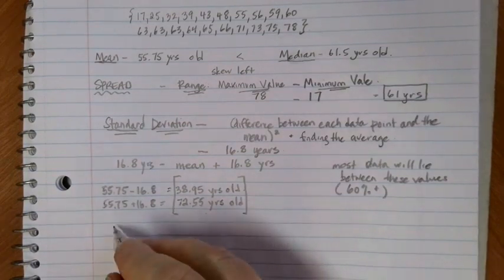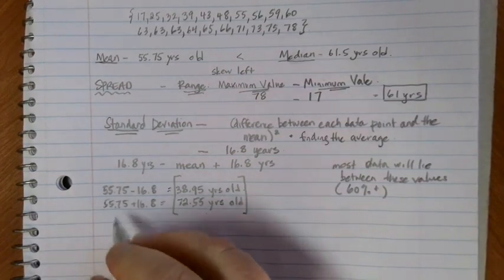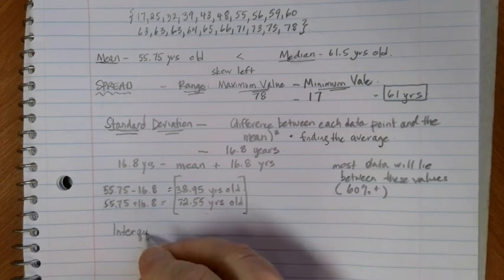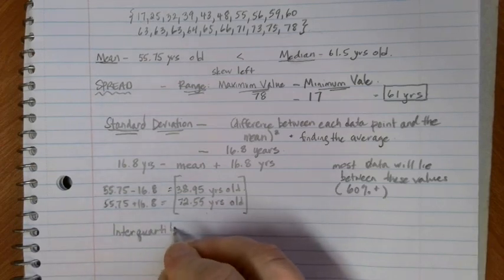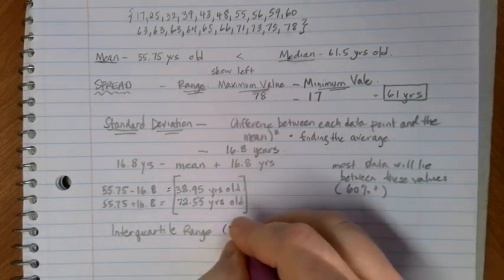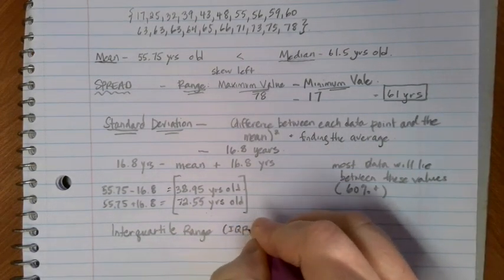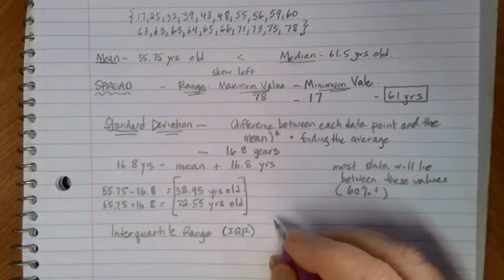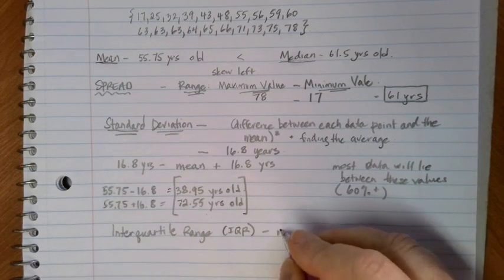Another method that we can use to talk about is something called the interquartile range. Sometimes we'll call this the IQR.